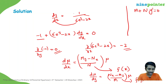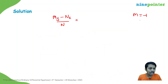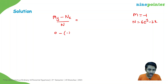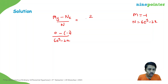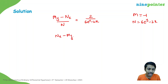Let's check the first condition: (M_y − N_x)/N. With M = −1 and N = 6e^(y−2x), M_y = 0 and N_x = −12e^(y−2x). So (M_y − N_x)/N = 12e^(y−2x) / 6e^(y−2x) = 2. Wait — this still depends on y, so it is not purely a function of x alone. We cannot use the first equation.